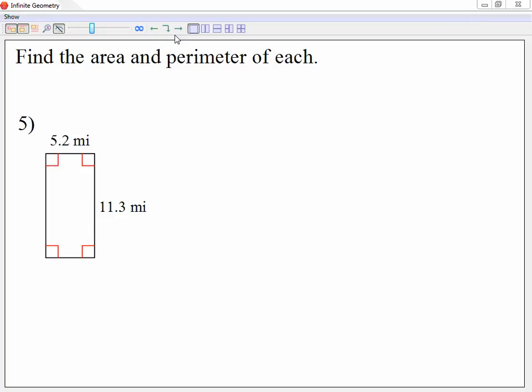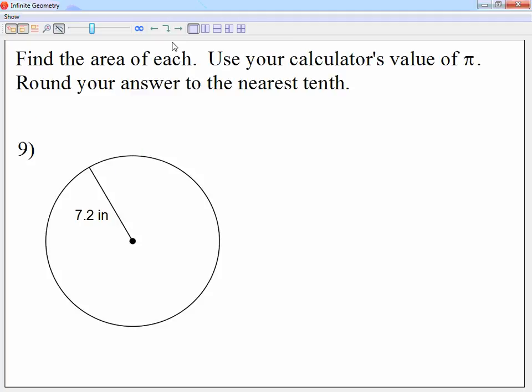All right. So looking at question number 9, we have areas of circles. Let's find the area of each. Use your calculator's value of pi. For those of you estimating, pi is about 3.14. If you press it on your calculator, it gives you a longer version. Round your answer to the nearest tenth. So one decimal point.